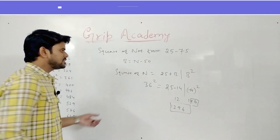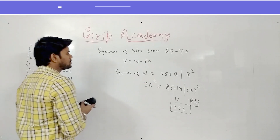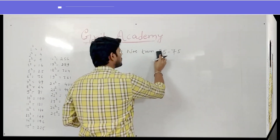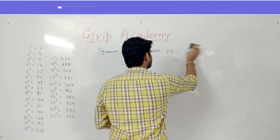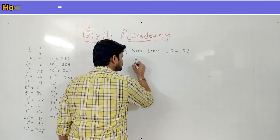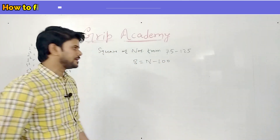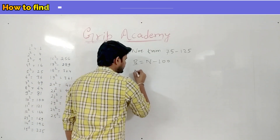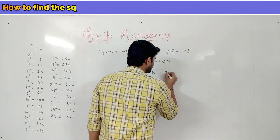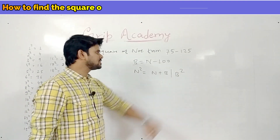Like this you can find the square of any number between 25 to 75. Now let's learn how to find the square of a number from 75 to 125. Here base will be n minus 100, and n squared will be given by n plus b, slash b squared.